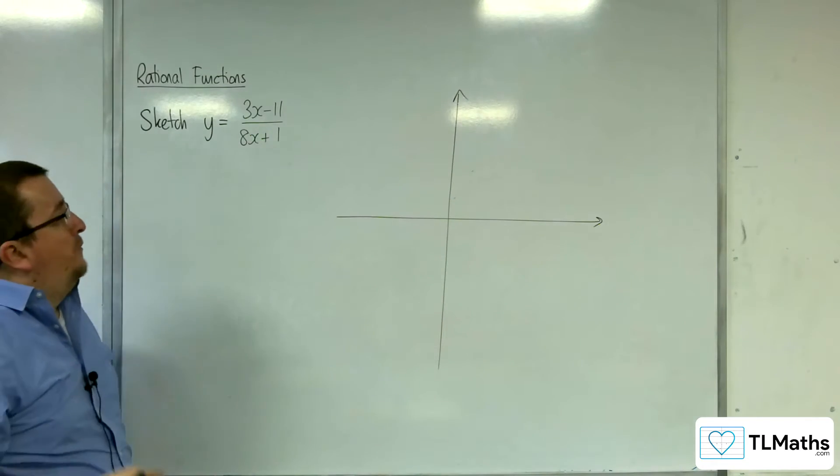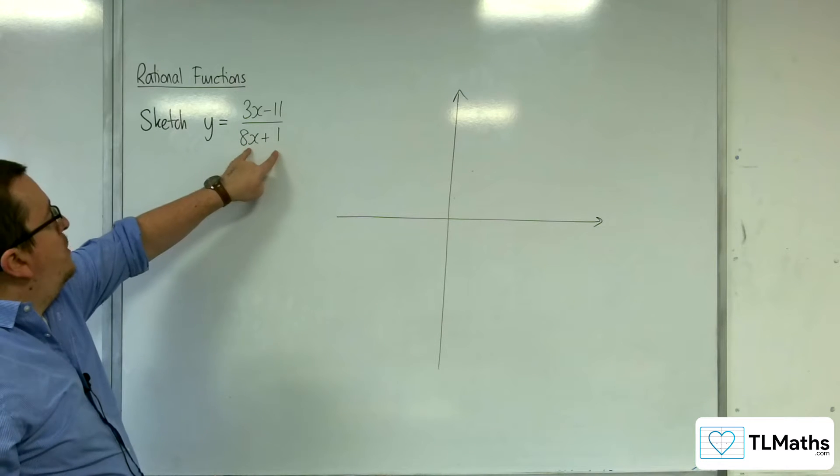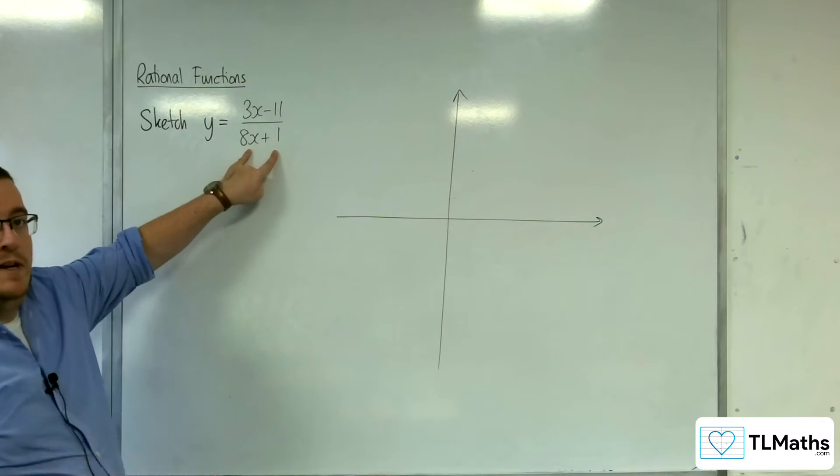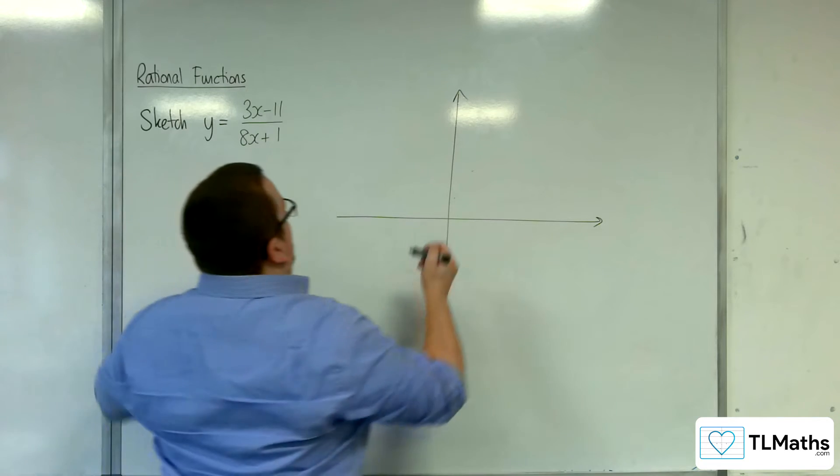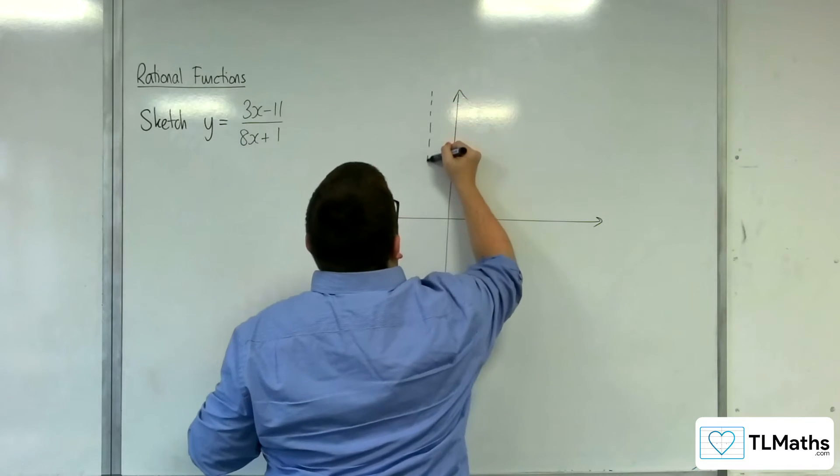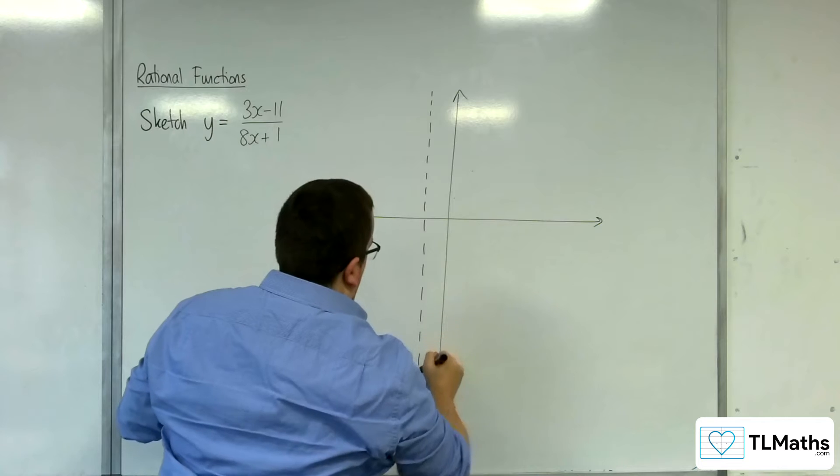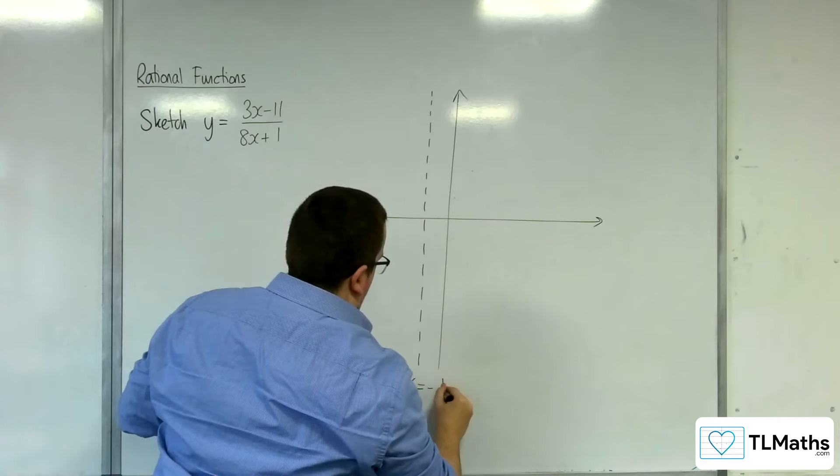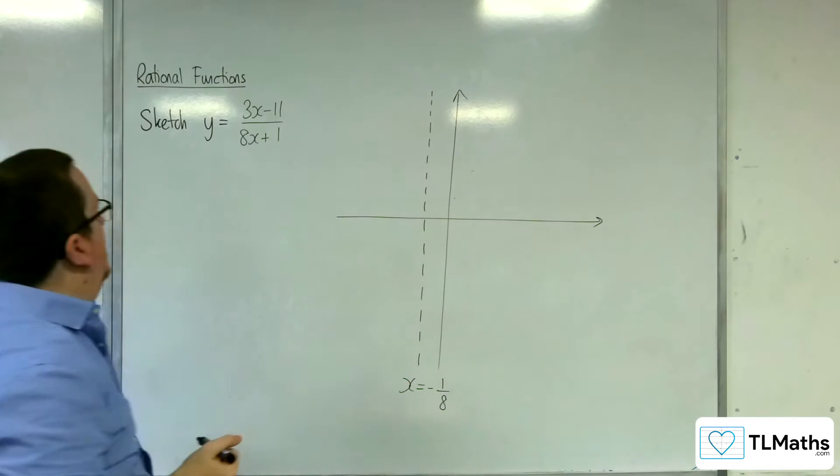So first of all, vertical asymptote. That's going to happen when the denominator is 0, so that would be at x equals minus 1 over 8. And so x equals minus 1 eighth is a vertical asymptote.